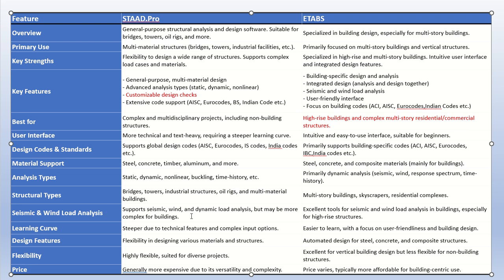STAAD Pro supports seismic, wind, and dynamic load analysis, but may be more complex for building-specific tasks. ETABS has excellent tools for seismic and wind load analysis for buildings, especially high-rise buildings. If you are designing a building, go for ETABS; if you are designing a general structure, go for STAAD Pro. For buildings, ETABS is first priority and STAAD Pro is second. For structures, STAAD Pro is clearly first. STAAD Pro has a steeper learning curve due to its many technical features and complex options.